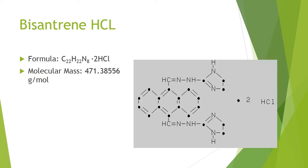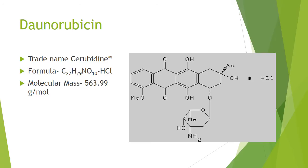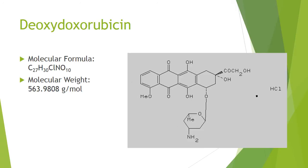Bisantrene HCL has the brand name Xantrim. It is a hydrochloride salt of an anthracenyl bishydrazone with anti-neoplastic activity. Daunorubicin was initially isolated from Streptomyces peucetius. The trade name is Cerubidine. Deoxydoxorubicin, another name is esorubicin, is a synthetic derivative of the anthracycline anti-neoplastic antibiotic doxorubicin with potential anti-neoplastic activity.